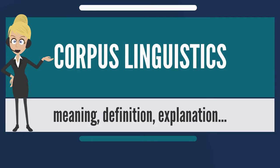Similarly, the early Arabic grammarians paid particular attention to the language of the Quran. In the Western European tradition, scholars prepared concordances to allow detailed study of the language of the Bible and other canonical texts.